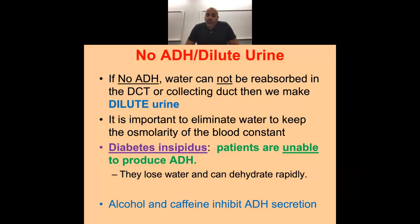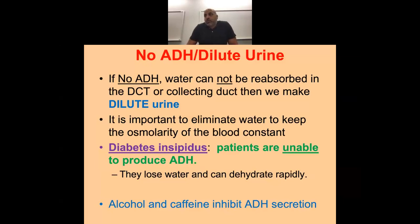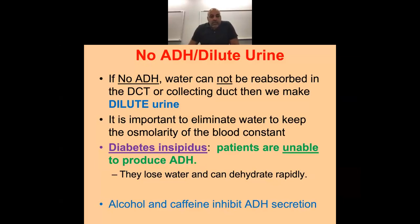Diabetes insipidus has nothing to do with sugar — it refers to excess urine production. People with DI either cannot produce ADH, have something wrong with the pituitary and can't release it, or they don't have the receptors in the kidney for it. They're always losing free water. They can actually overhydrate and water down their electrolytes. If they're just not producing ADH, we can give them a drug to mimic ADH and they can have normalcy.